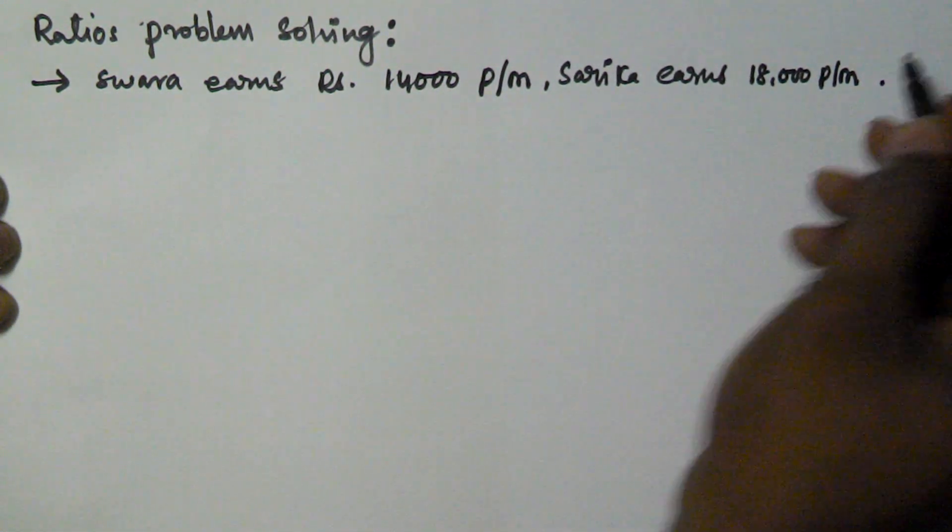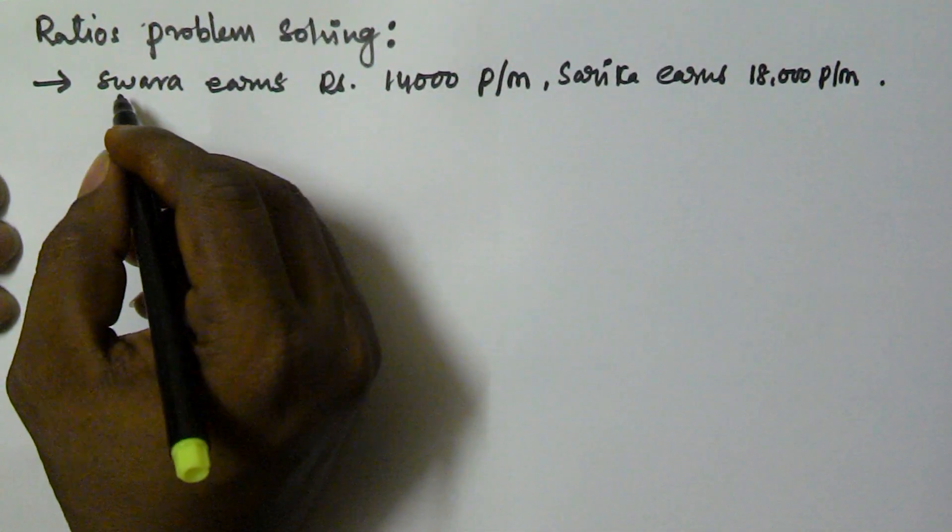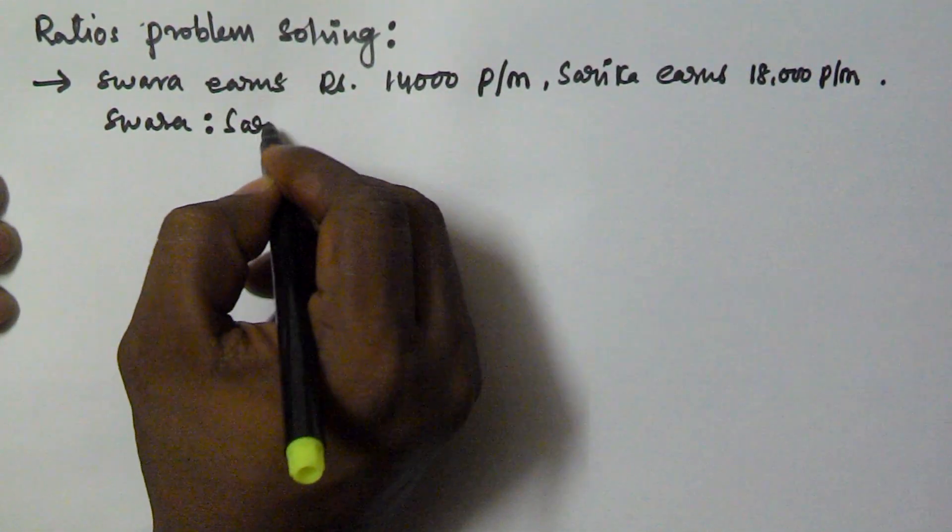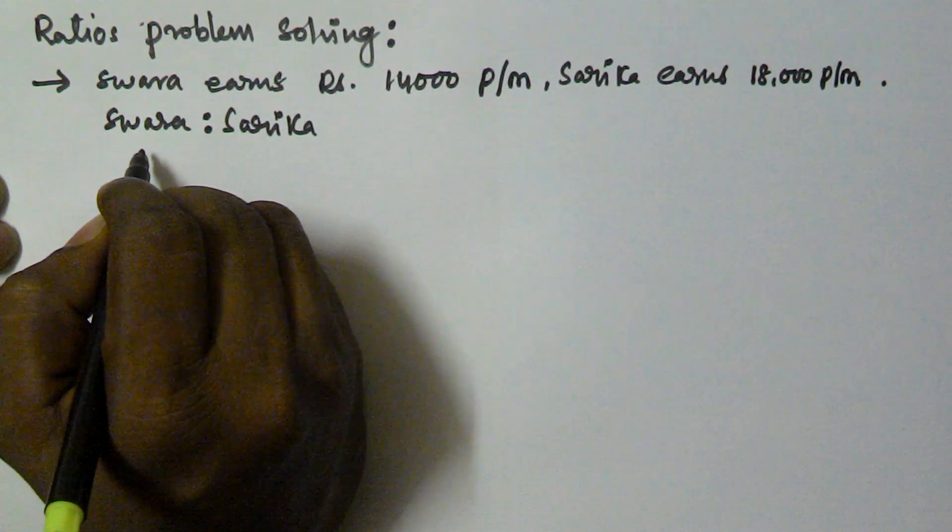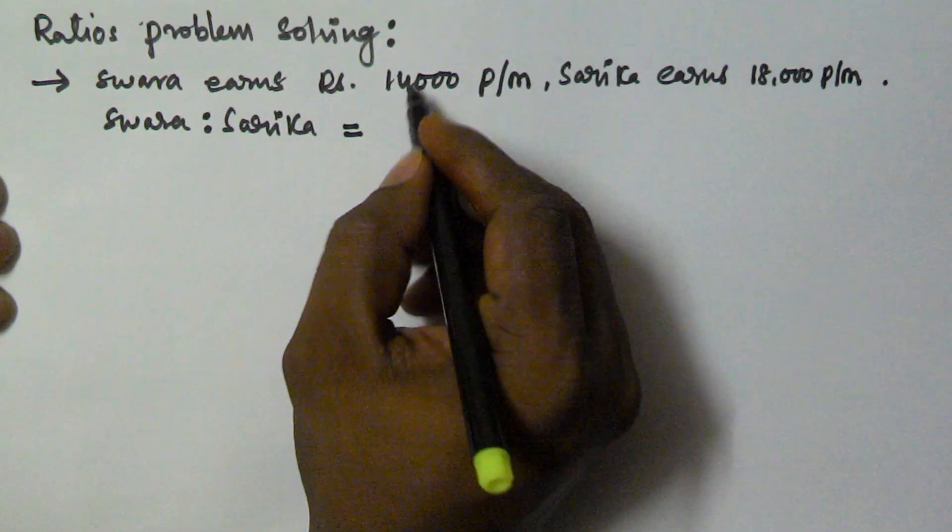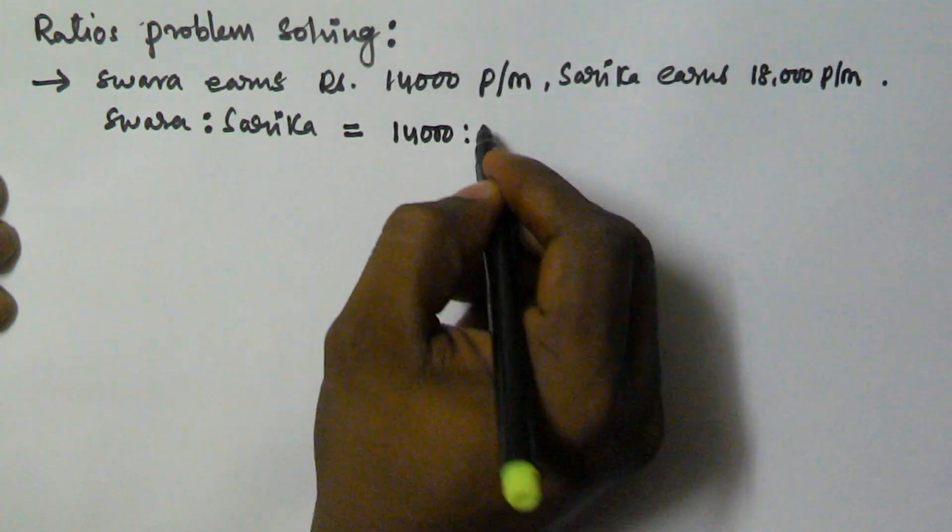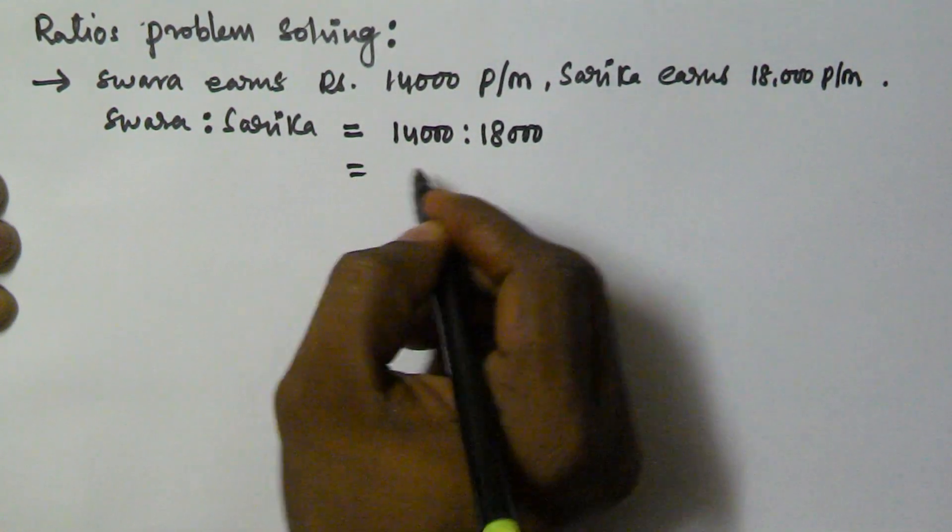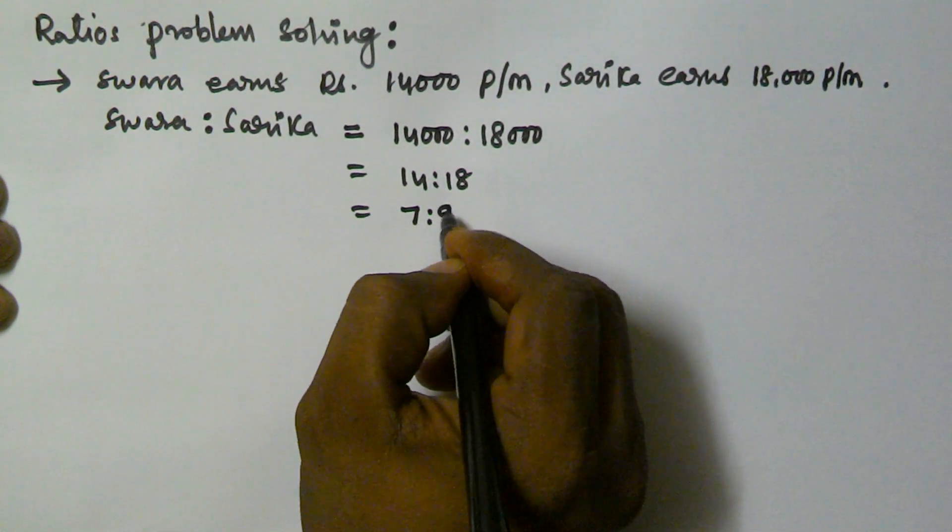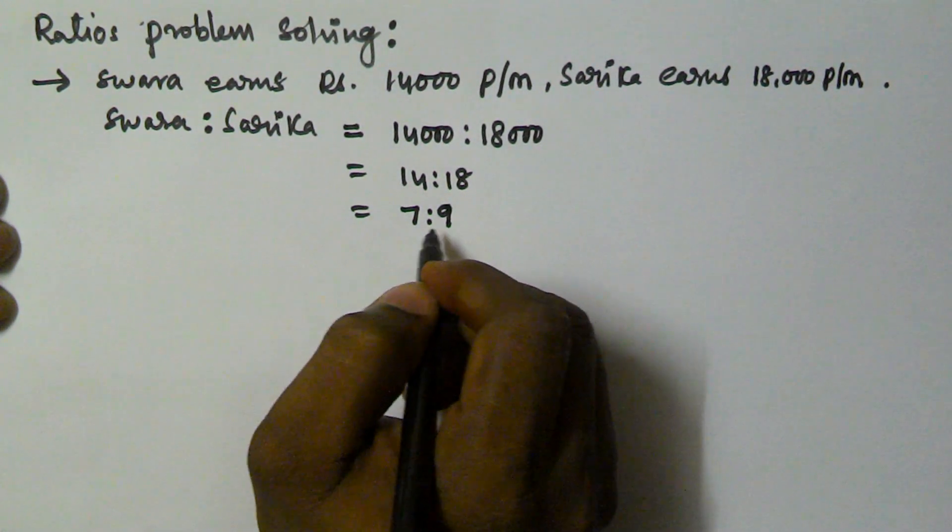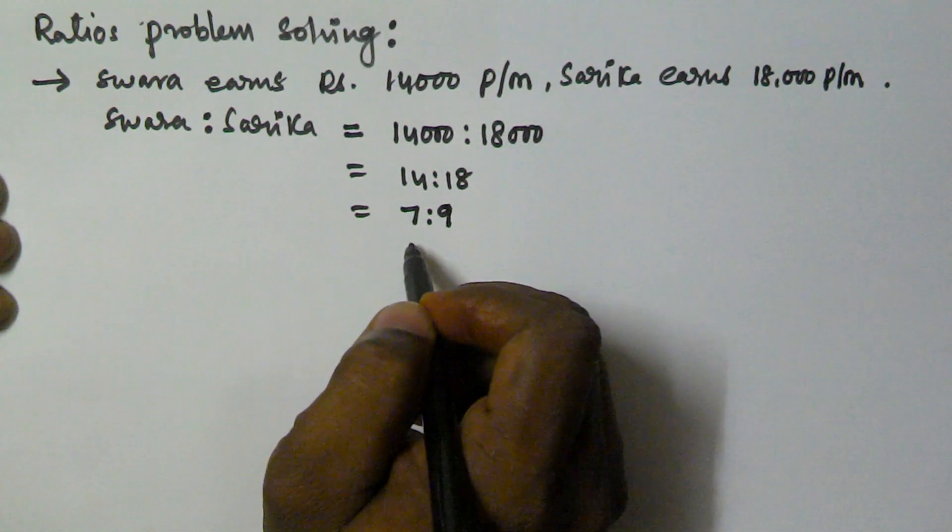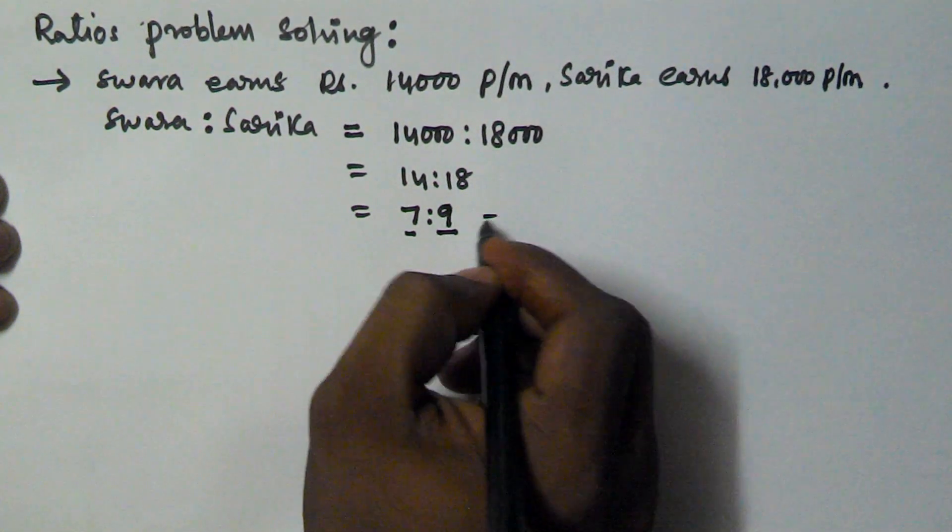Then find the ratio of Swara's salary to Sarika's salary. That means, Swara colon Sarika salary. We have to find the ratio of Swara's salary to Sarika. So this is equal to 14,000 colon 18,000. The same can be written as 14 colon 18. The same can be written as 7 colon 9. So the ratio of the salaries or the earns per month is 7 colon 9 or 7 by 9.